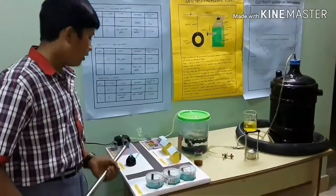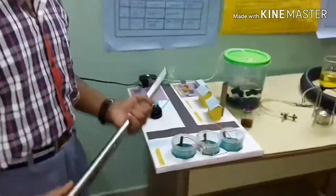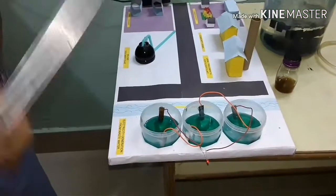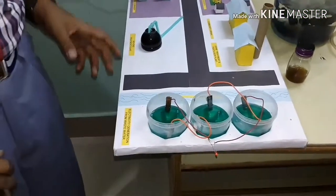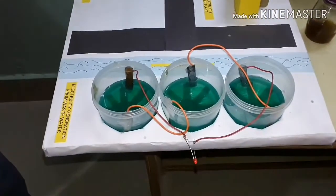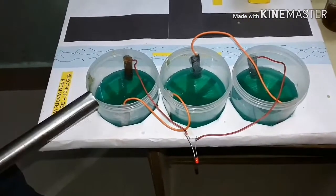We have got the first model which is electricity generation from waste water. In this model we have three chambers. Each chamber contains copper cathode and zinc anode. When the drain water comes into this chamber, the drain water behaves as an electrolyte and each chamber acts as a cell.